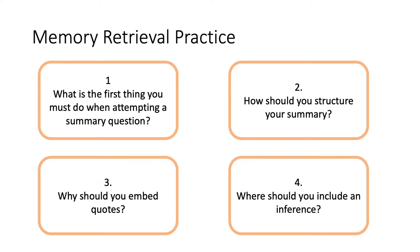Question one: what is the first thing you must do when attempting a summary question? The most important thing you have to do is to highlight the key words. You absolutely have to do this, because if you don't, you will not get any marks. The biggest mistake that students make is failing to address the question — they write a summary but it is not based on the actual question, and therefore they get zero. So this is a really important step.